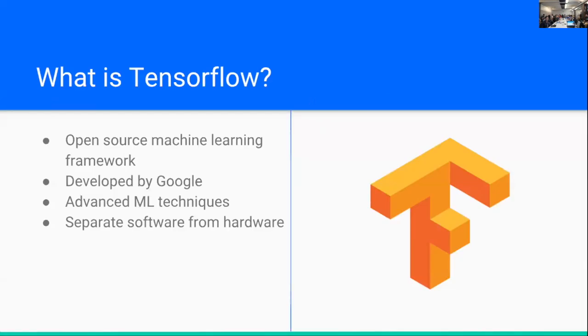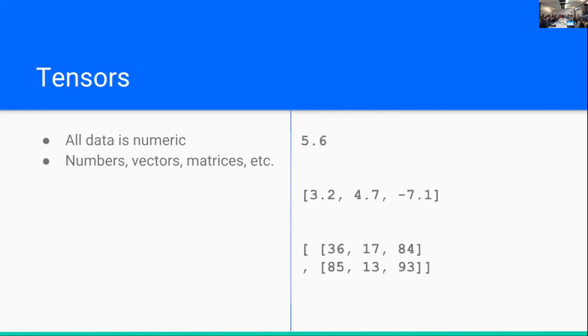TensorFlow is an open-source machine learning framework developed by Google. It puts advanced machine learning techniques in the hands of ordinary developers like you and me. One thing that's really good at is helping us separate the sort of algorithmic concerns of machine learning from the hardware challenges that come with doing a lot of computation. So the fundamental unit of computation in TensorFlow is a tensor, and this is any kind of numeric data that we can represent, whether that's just a single number, or a vector of numbers, or matrix, or we need to go into more dimensions, have an array of matrices.